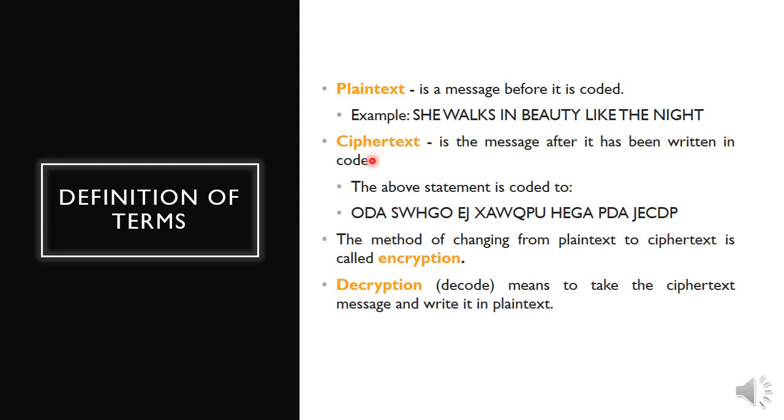These are the definition of terms that we need to know to understand this topic. Plaintext: this is the message before it is coded. For example, 'she walks in beauty like the night.' We can understand it right away, it is in plain text. Ciphertext: this is the message after it has been written in code. The above statement could be written as ODASWHGO and so on and so forth. This is the coded text, called the ciphertext.